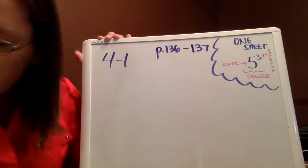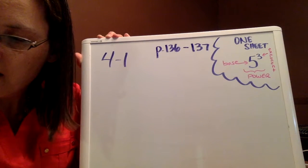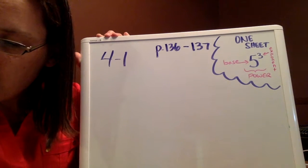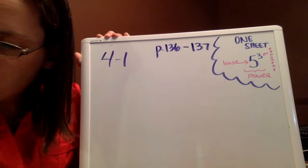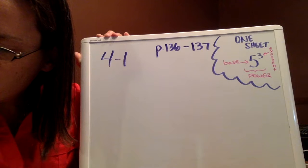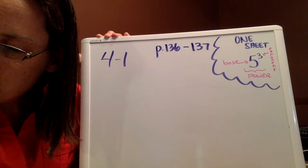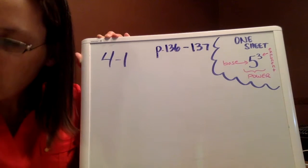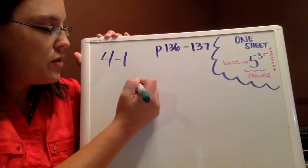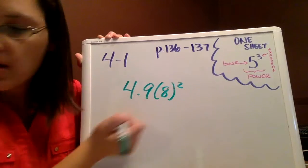You can read through on page 137, example A and B, and how they rewrote those expressions using exponents. The problem says: A tennis ball is dropped from the top of the building. After 8 seconds, the tennis ball hits the ground. The distance in meters the ball traveled is represented by 4.9 times the quantity 8 squared.